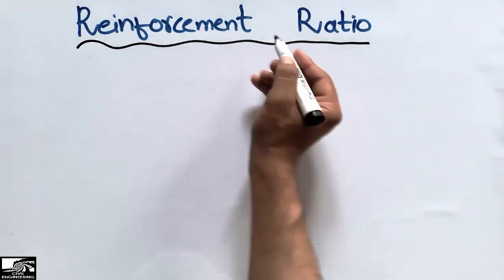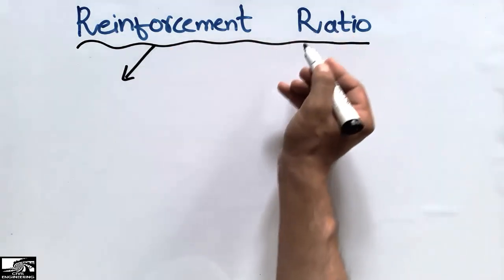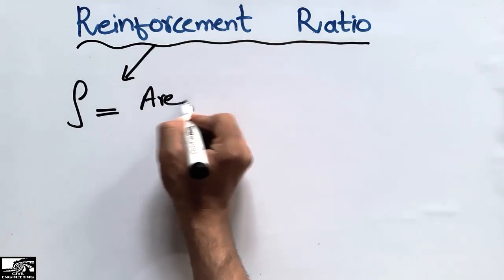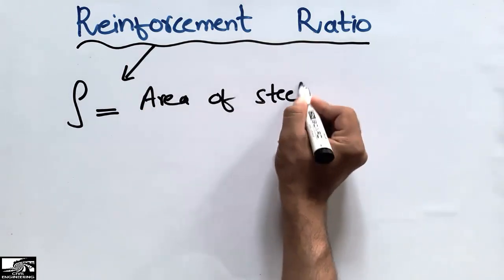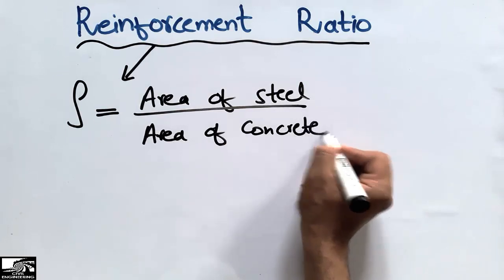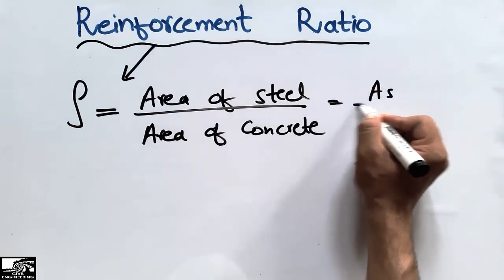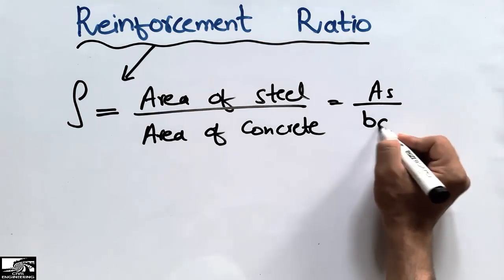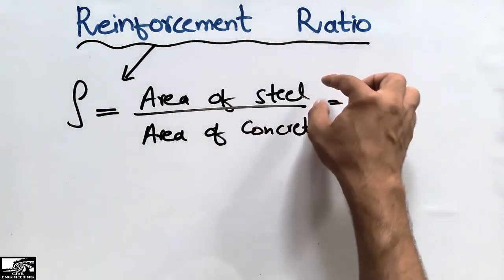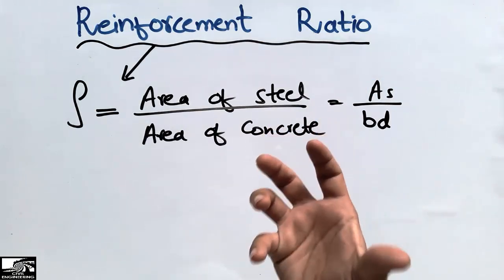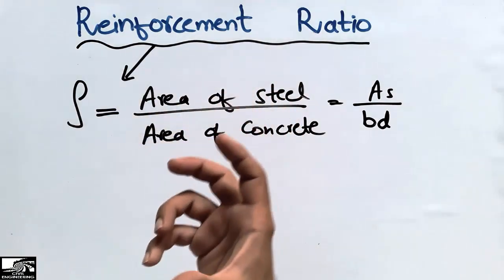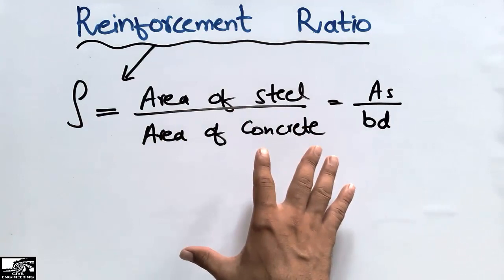To define the reinforcement ratio: it is represented usually by the symbol ρ (rho), and it is the ratio of the area of the steel to the area of the concrete. The area of steel is represented by As, and the area of concrete is usually represented by the cross-section dimensions of the member, which is b×d. So this ratio — area of steel divided by area of concrete — for any structural member, whether beam or column, is called the reinforcement ratio, and it shows how much reinforcement is used in our structural member.